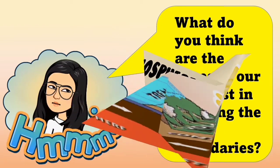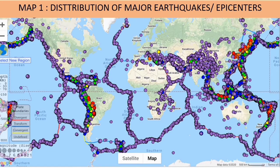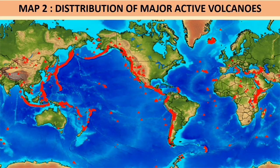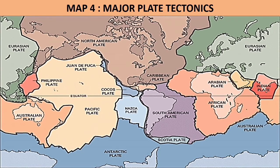What do you think are the bases of scientists in marking the plate boundaries? Let's examine the following maps. The first map shows the distribution of major earthquakes or epicenters. The second map shows the distribution of major active volcanoes. The third map shows the distribution of mountain belts in the world. And the fourth map shows the major plate tectonics. Now, let's put together the maps.